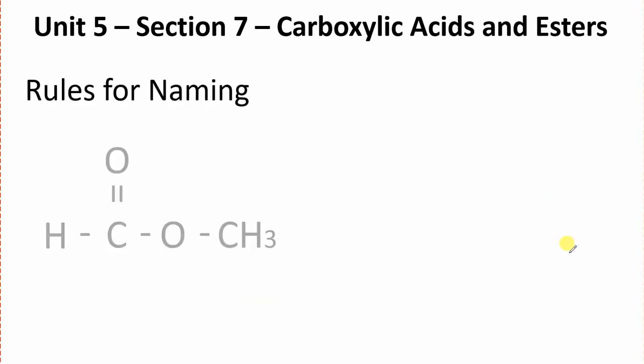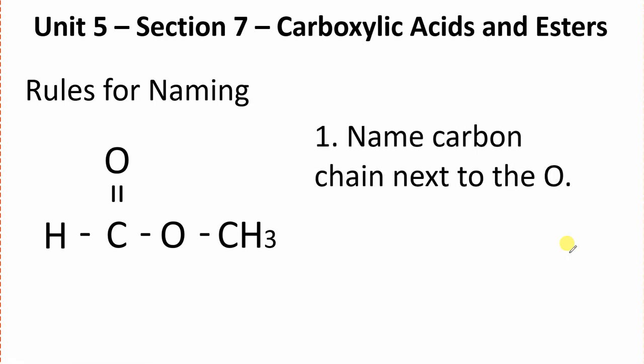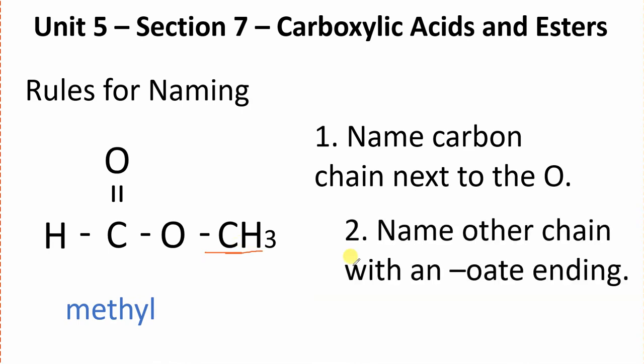Let's look at some rules we're going to have to follow. First rule says we want to name the carbon chain next to the oxygen. That would be that one - it's only one carbon long, so we're going to call it methyl. Second rule says we want to name the other carbon chain. This one actually is only one long with an oate ending. So methane becomes methanoate. The E in methane gets dropped and we're replacing it with oate. So methyl methanoate.